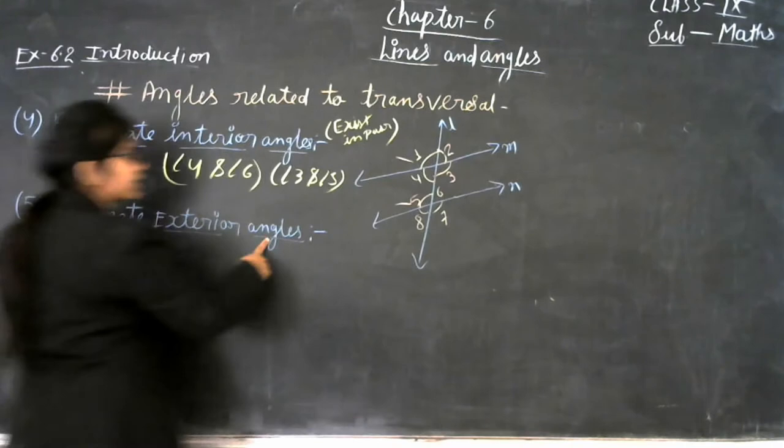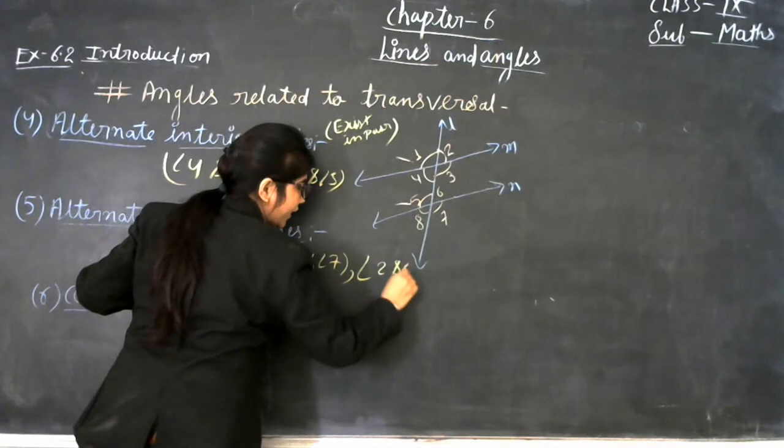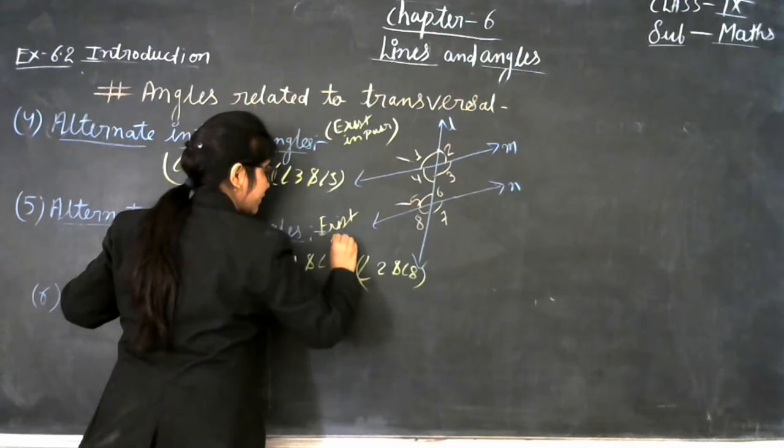The next type is alternate exterior angles. Angle 1 and angle 7 are alternate exterior angles, and angle 2 and angle 8 are the second pair. These also exist in pairs.